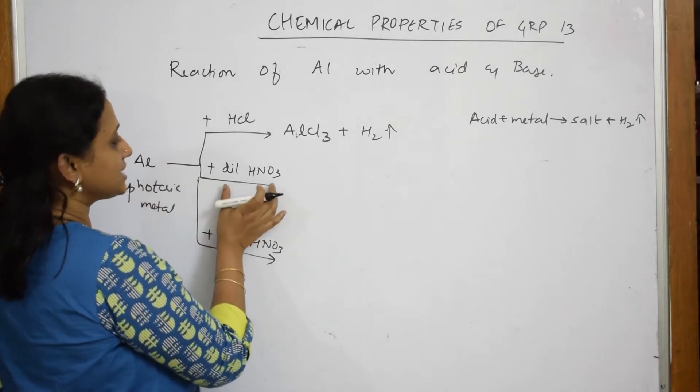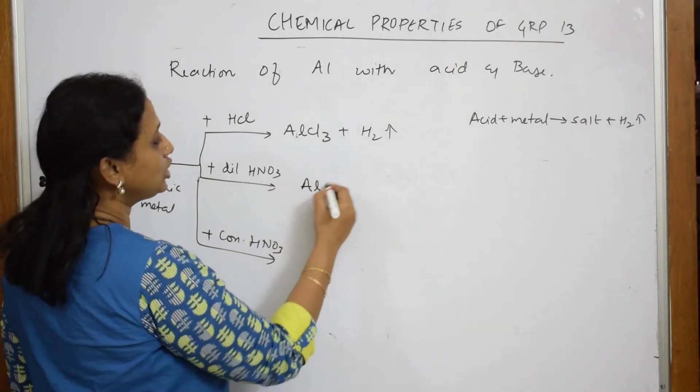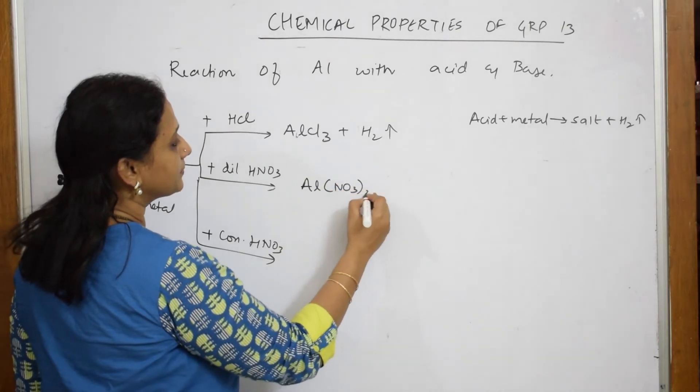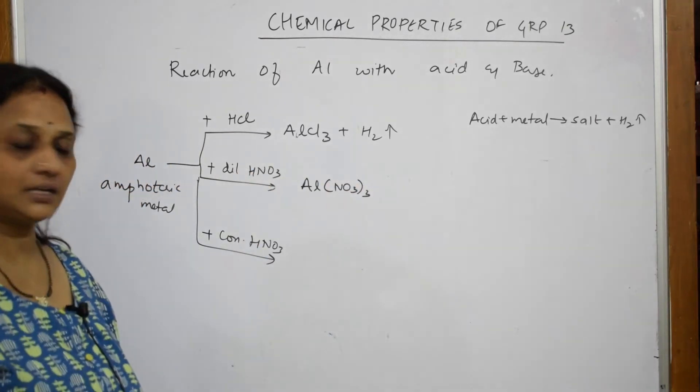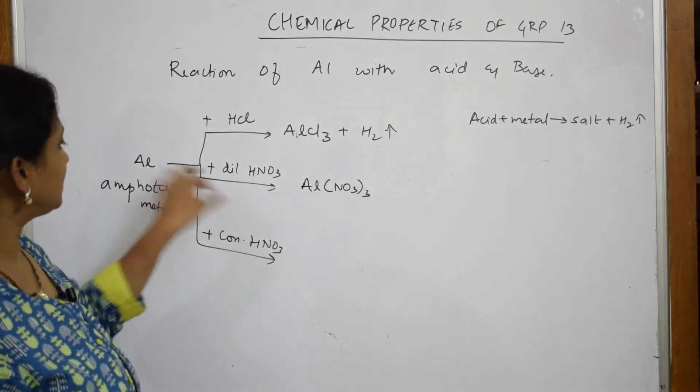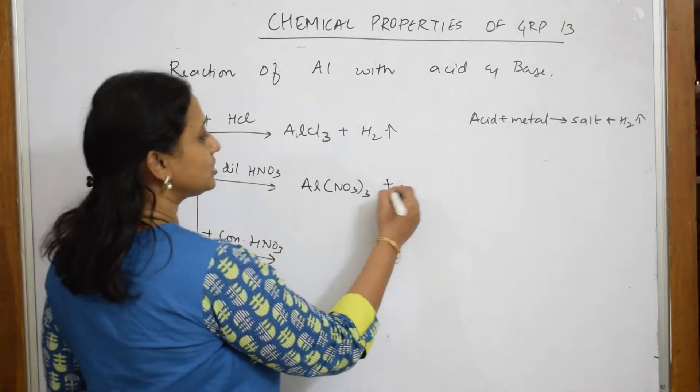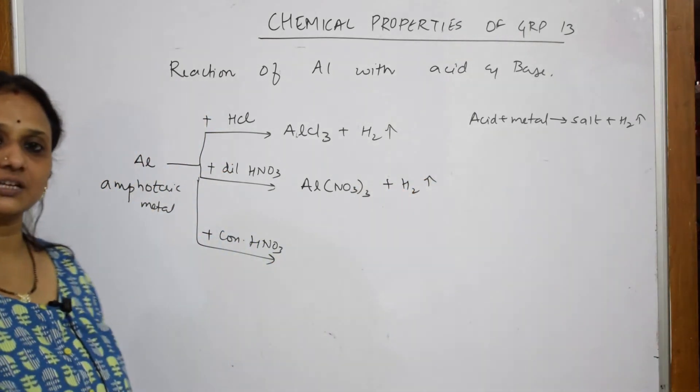If I pick up dilute HNO3, not a problem. It will directly react again, same thing. Acid plus metal. So it is going to form aluminum nitrate, because acid plus metal has to give me salt. It is a salt, plus as usual you will get hydrogen gas. Aluminum nitrate plus hydrogen gas.